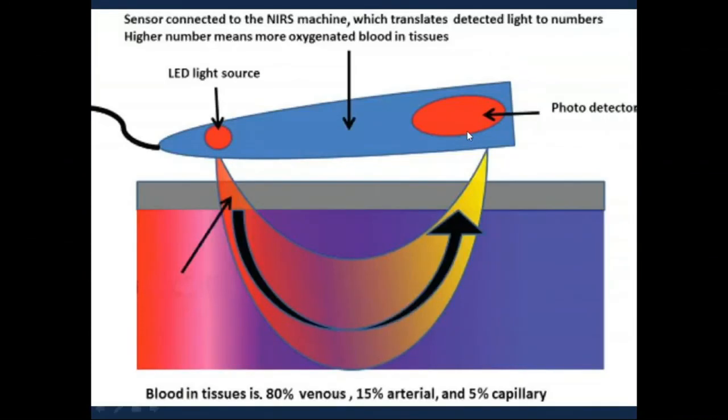So this is a sensor for near-infrared spectroscopy, composed of two parts. One part with the LED light source. The light, the near-infrared light, will be transmitted through the tissues, and the tissues contain mainly venous blood—only 15% arterial, 5% capillary, but most of the blood, 80% or more, is venous blood.